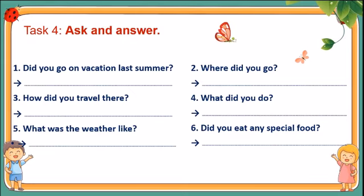Now look at Task 4 — ask and answer. There are 6 questions: 1. Did you go on vacation last summer? 2. Where did you go? 3. How did you travel there? 4. What did you do? 5. What was the weather like? 6. Did you eat any special food?